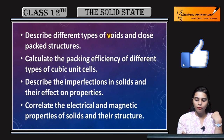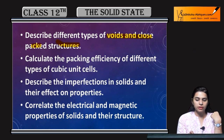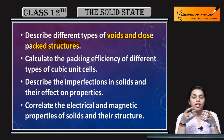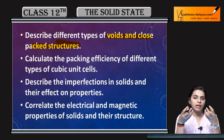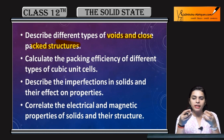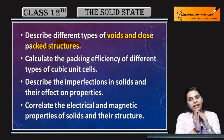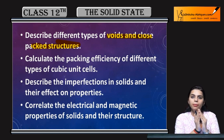Next is different types of voids and close-packed structures. What are voids? They are empty spaces. When you arrange particles, ions, or atoms, there will be vacant spaces left in the arrangement — those are called voids. How many types of voids are there? We will study all of them in detail.